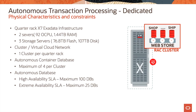This slide shows the physical characteristics and constraints. A quarter-rack X7 Exadata infrastructure has two servers with 92 OCPUs and 1.44 terabytes of RAM. It has three storage servers providing 76.8 terabytes of flash and 107 terabytes of disk space. There is one cluster per quarter rack, with a maximum of four autonomous container databases per cluster. With a high availability SLA you can have a maximum of 100 databases, and with an extreme availability SLA a maximum of 25 databases.